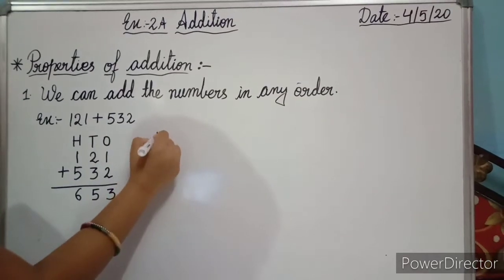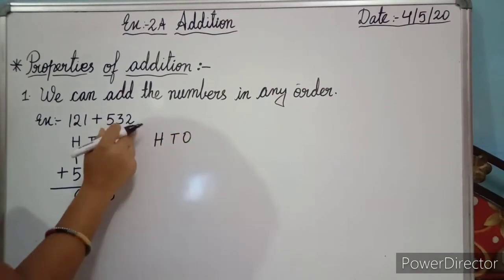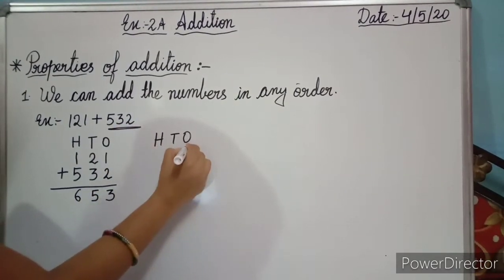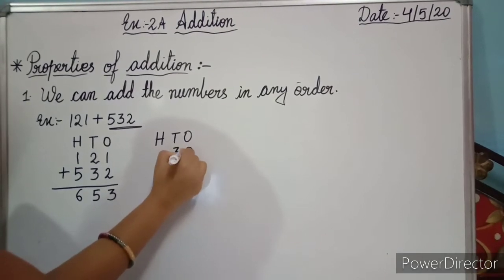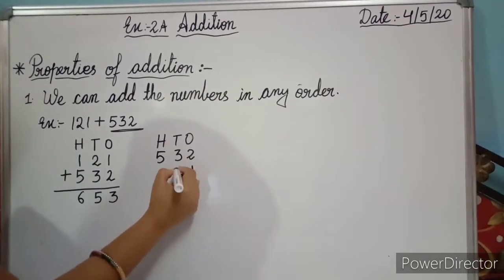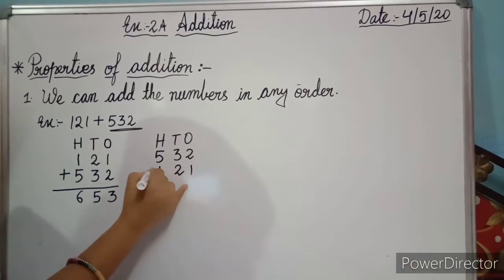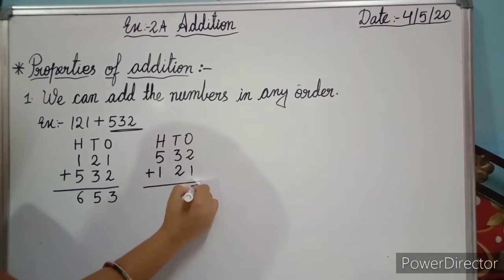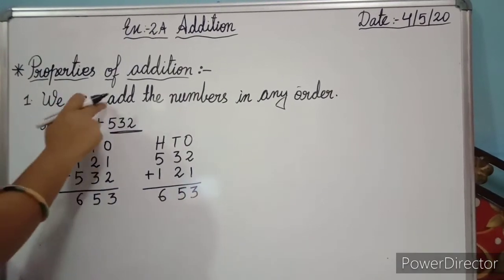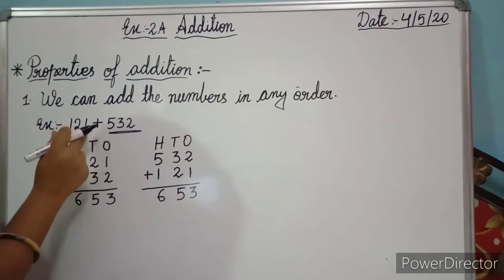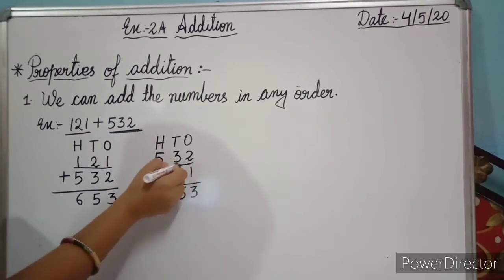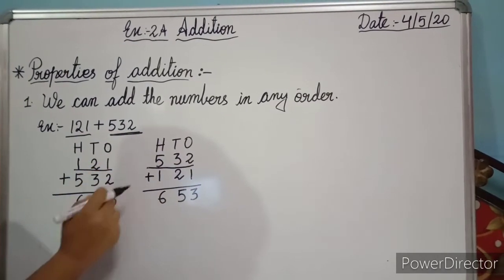We can also add them the other way around — putting 5, 2, 3 first and 1, 2, 1 second — and the answer will be the same. So we can add the numbers in any order; we can put either number first and the answer will remain the same.